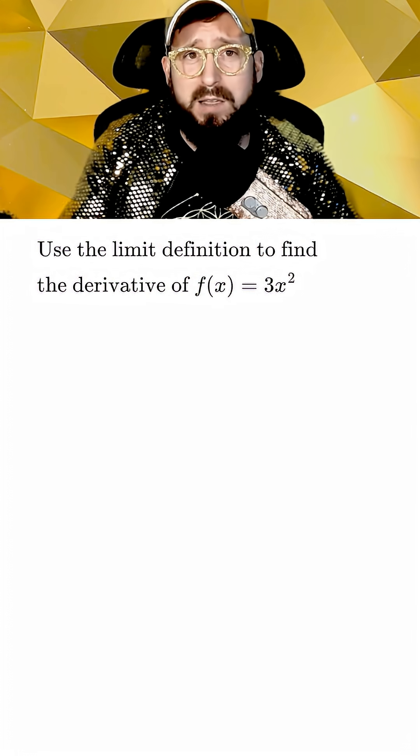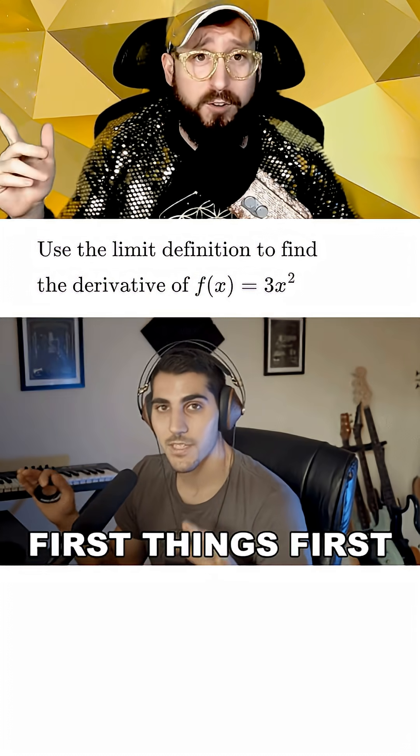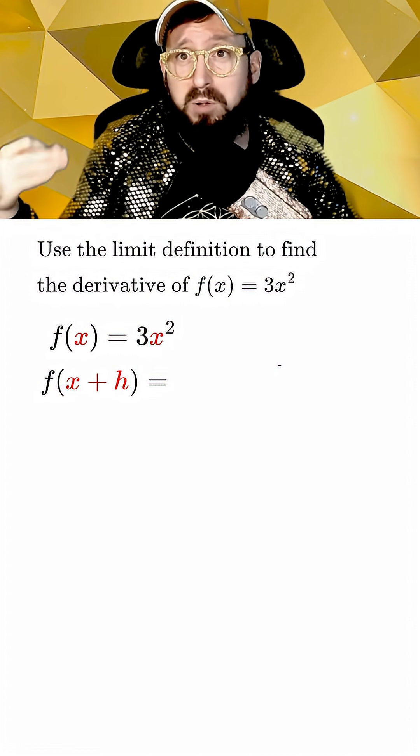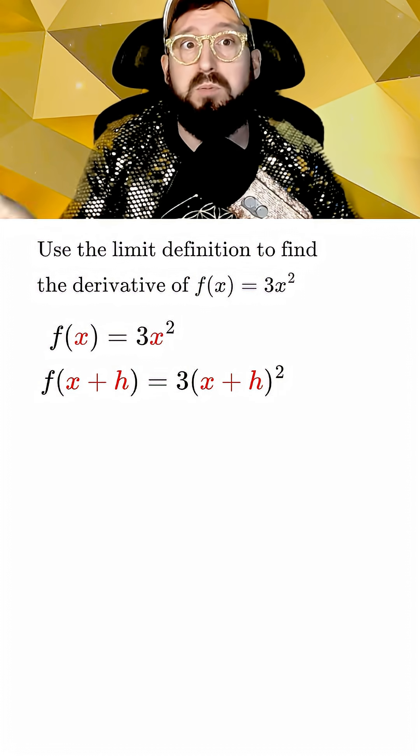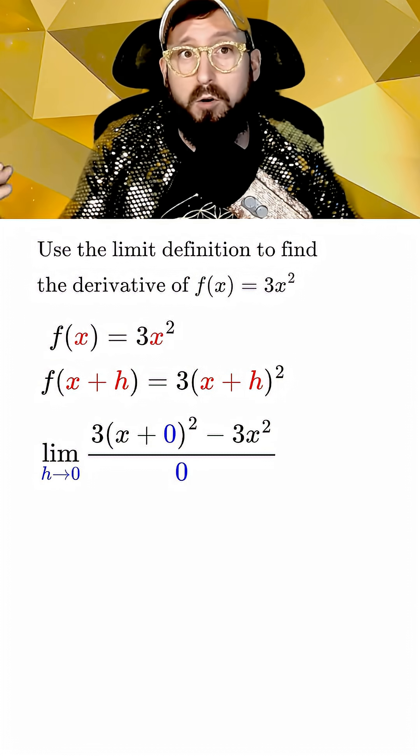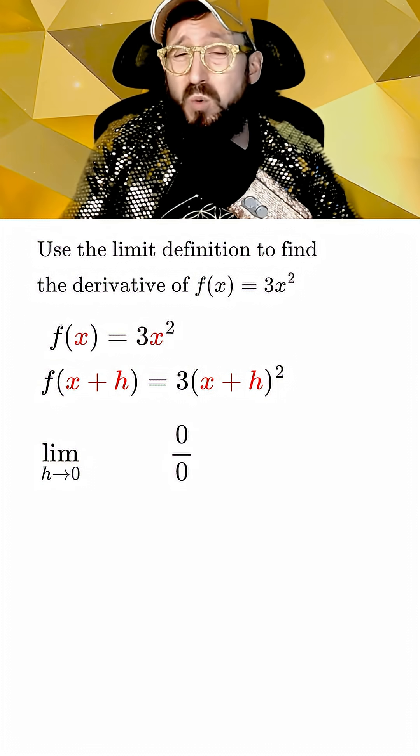Let's consider using the limit definition to find the derivative of 3x squared. The first thing we're going to do is write our f(x) as 3x squared, which means that f(x+h) would just equal 3 times (x+h) squared. Now we plug these into our limit formula and see if we were to just set h equal to 0 right now, we would get 0 over 0, which is bad.